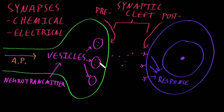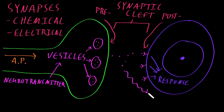After a neurotransmitter is released from the pre-synaptic membrane and spends some time binding to receptors on the post-synaptic membrane, it then leaves the synaptic cleft either by diffusing away or by being actively removed by one of several mechanisms. This allows the synapse to be reset so that it is ready to communicate more information from the neuron to the target cell.